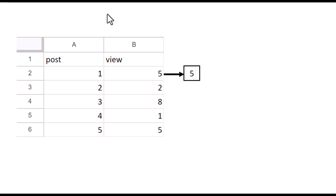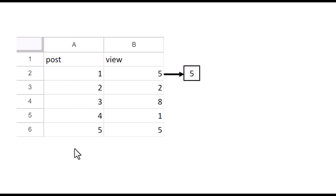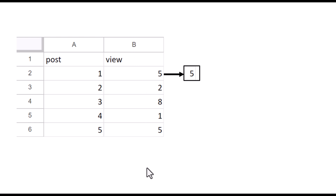Here is an example. Suppose that we have data like this that has two columns: post number one, two, three, and all the way up to post number five. And here we have another column called view — for example, five, two, and so on. This is the corresponding view of each post.